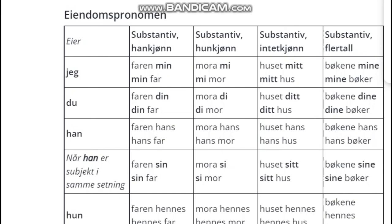For plural nouns in ubestemt form you use 'mine.' For example 'mine bøker' means 'my books.' The bestemt form of 'mine bøker' is 'bøkene mine.' So to summarize: min for hankjønn, mi for hunkjønn, mitt for intetkjønn, and mine for flertall. That was all about possessive pronouns for jeg.